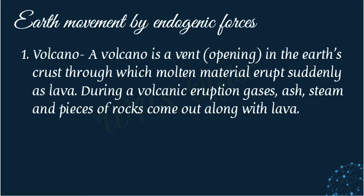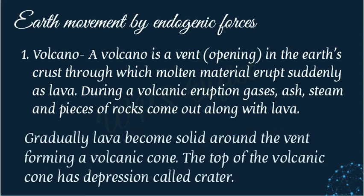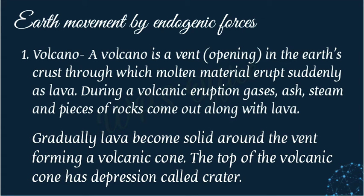During the eruption, gases of many kinds, rock fragments, steam, pieces of stones, and molten rock flow out with lava. Gradually, lava becomes solid around the vent, forming a volcanic cone. After coming out, the lava starts cooling and becomes solid, building a volcanic cone around the pipe through which it emerged.